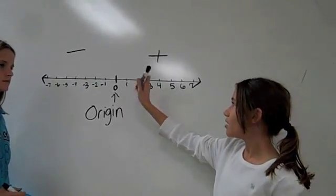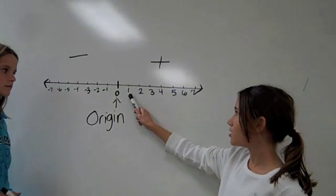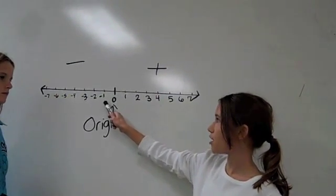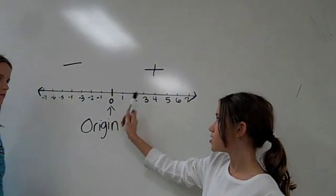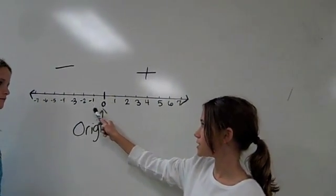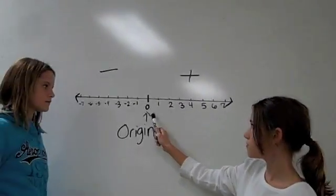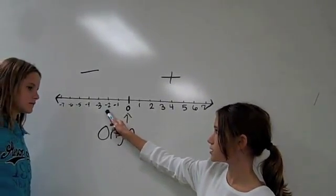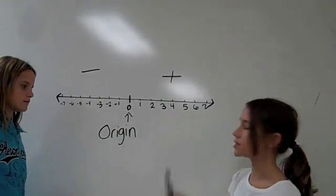Remember that each number is the same distance away from 0 as the negative number. So, 1 is the same distance from 0 as negative 1, 2 from 0 is the same as negative 2 from 0, and so on.